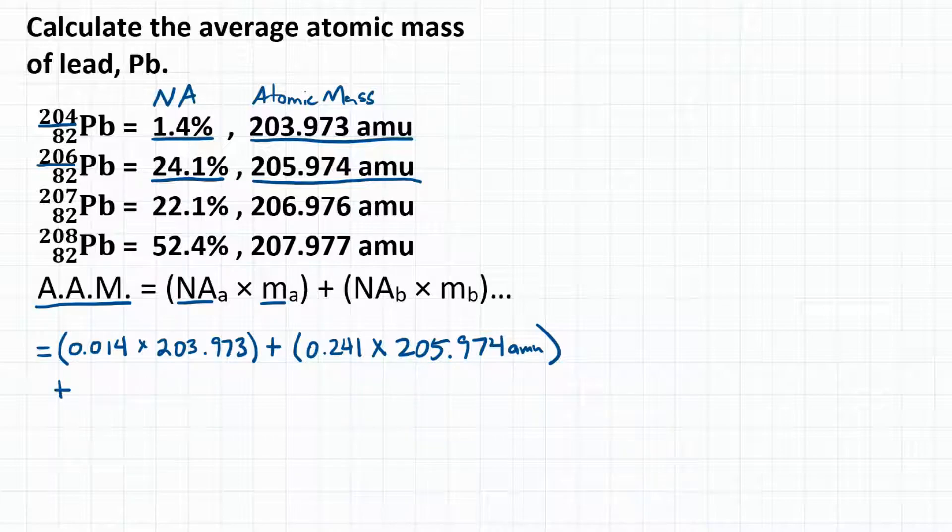And then we'll add our third isotope, lead-207, with the following natural abundance and atomic mass: 0.221 times 206.976 AMU.